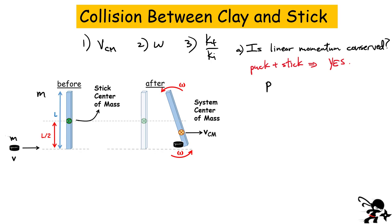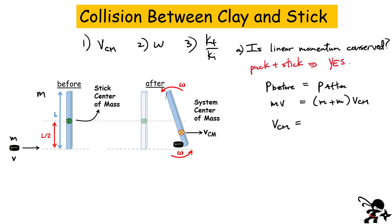That means the total momentum before equals the total momentum after. Before, only one object is moving — its linear momentum is MV. After, we have the puck and the stick combined, each of mass m, so total mass 2m, all moving together. The center of mass of this system must move to the right — no external forces acting on it. So the velocity of the center of mass is MV divided by 2M, giving VCM = V/2.